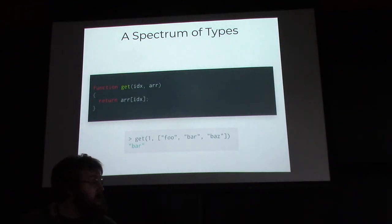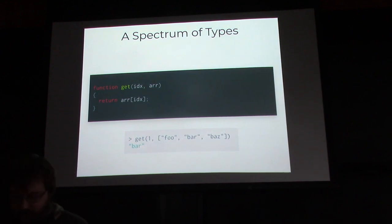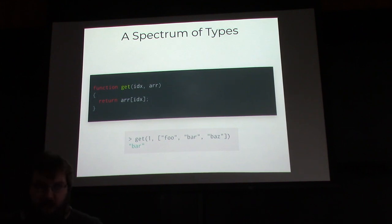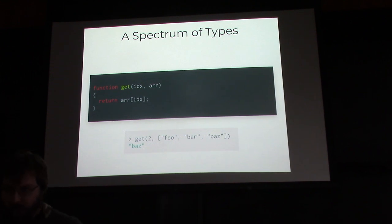Here's some pseudocode that represents an array indexing function in an untyped language. You have an array of numbers or whatever, and you have an index, and you want to get the element in the array at that index. So get one is 'bar' because array indices start at zero, and get two is 'bas' — these are strings. You apply get and you get the thing that's in the array.